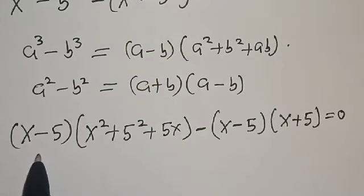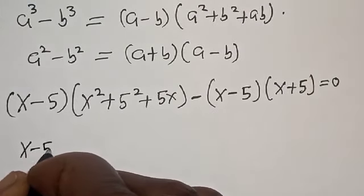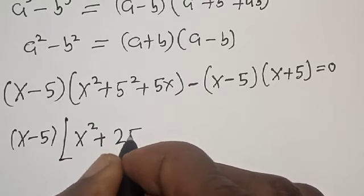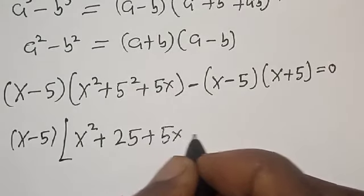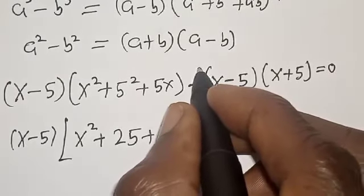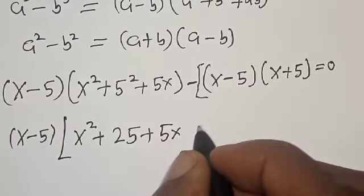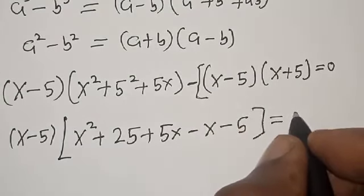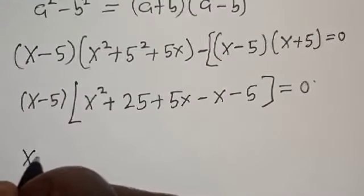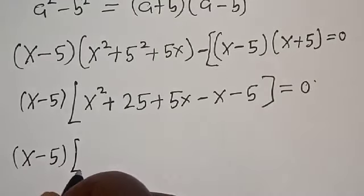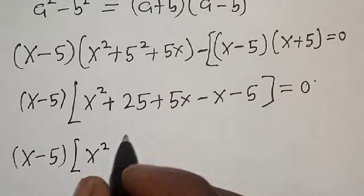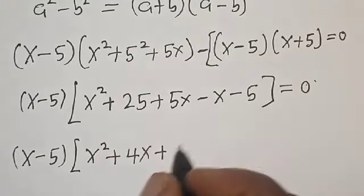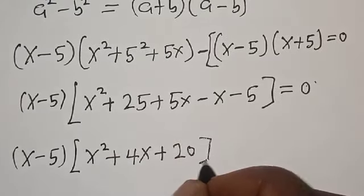Since (x - 5) is common, we factor it out. We get (x - 5) times (x² + 5x + 25 - x - 5) equals 0. Opening the bracket gives minus x minus 5, so combining terms: x squared plus 5x minus x is 4x, and 25 minus 5 is 20. This gives us (x - 5)(x² + 4x + 20) = 0.